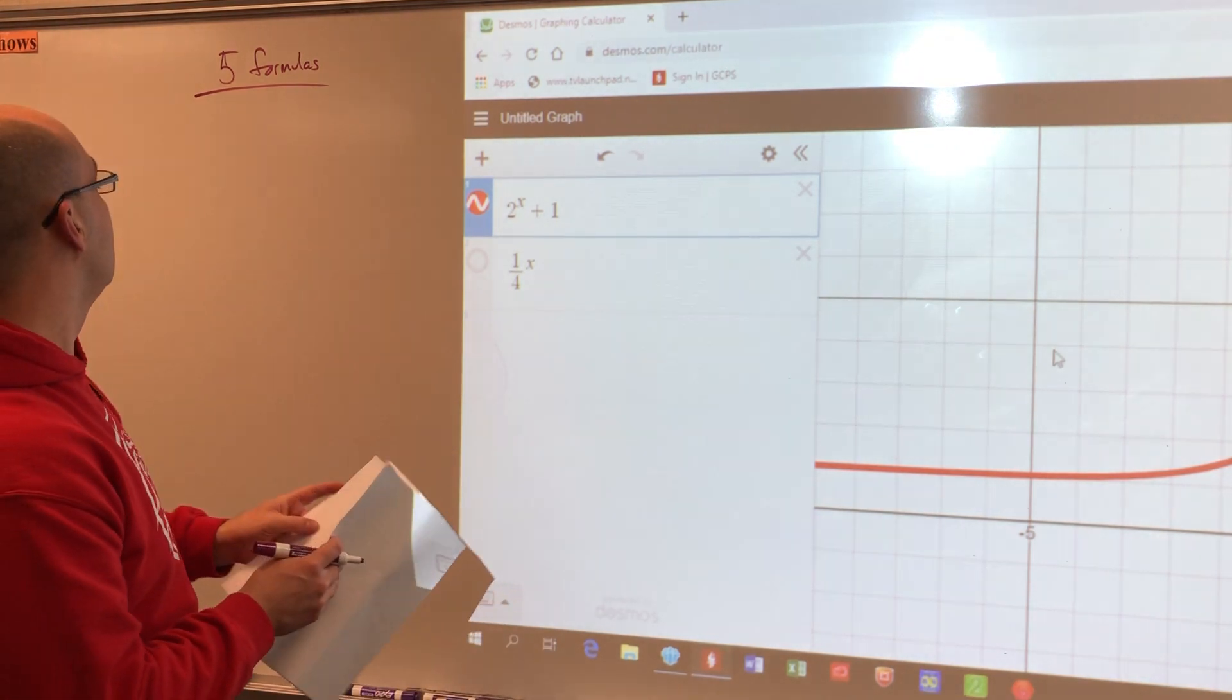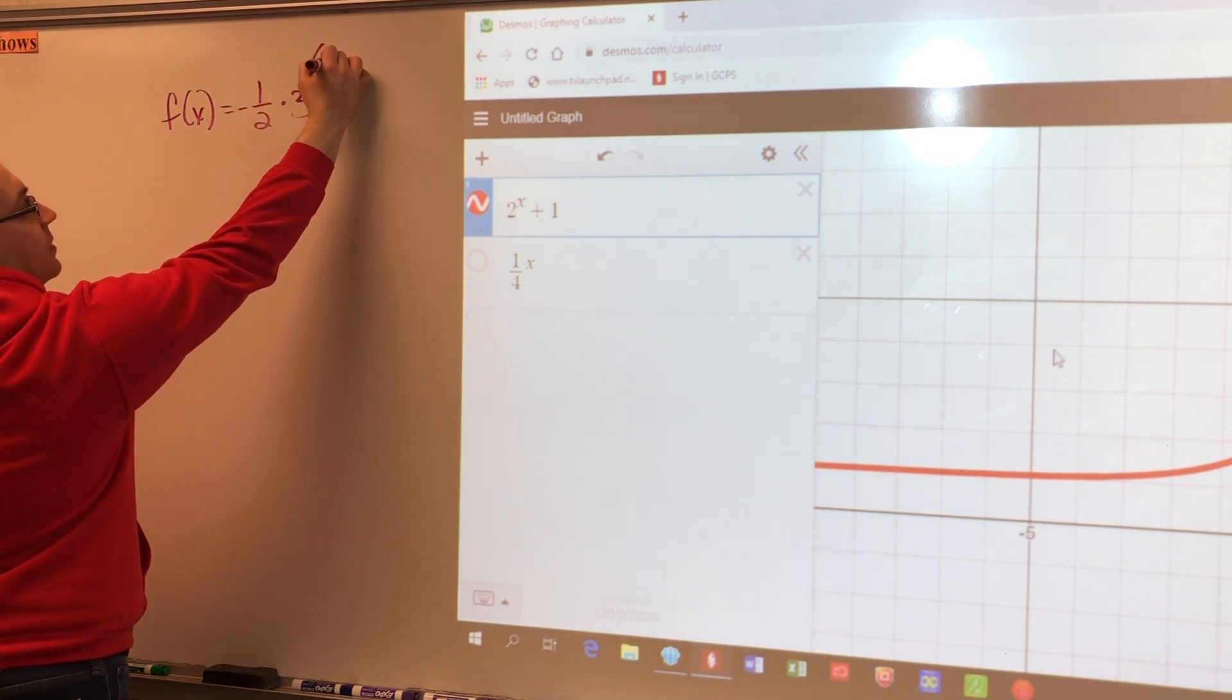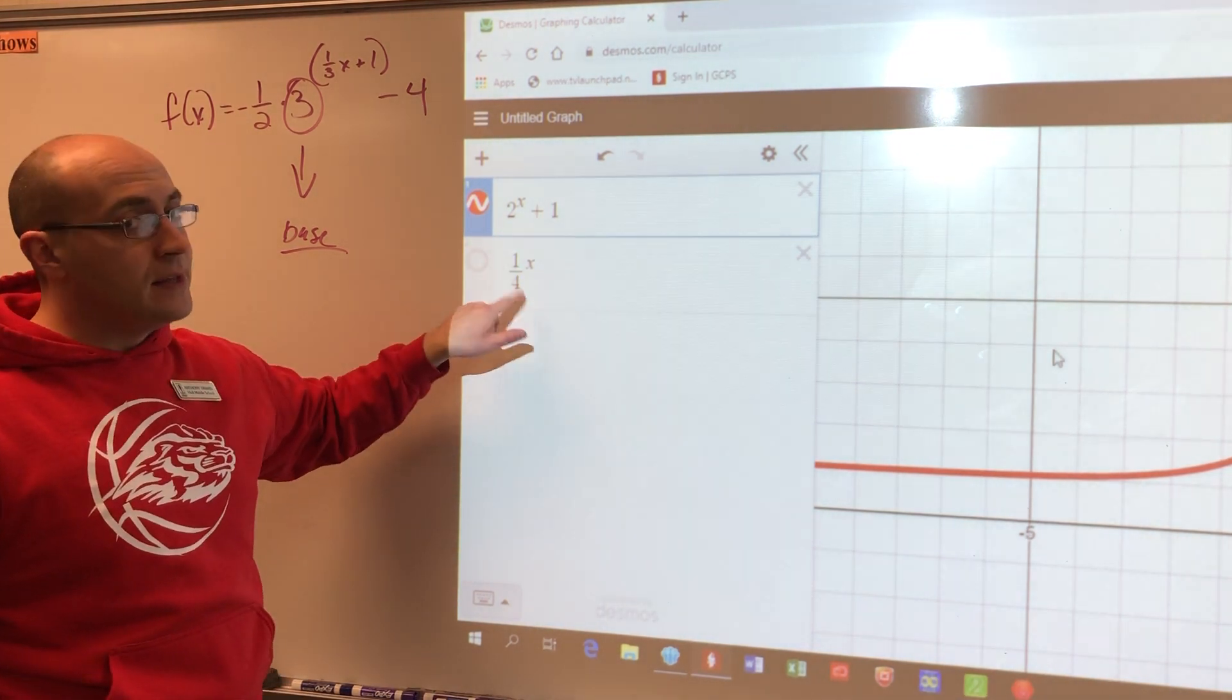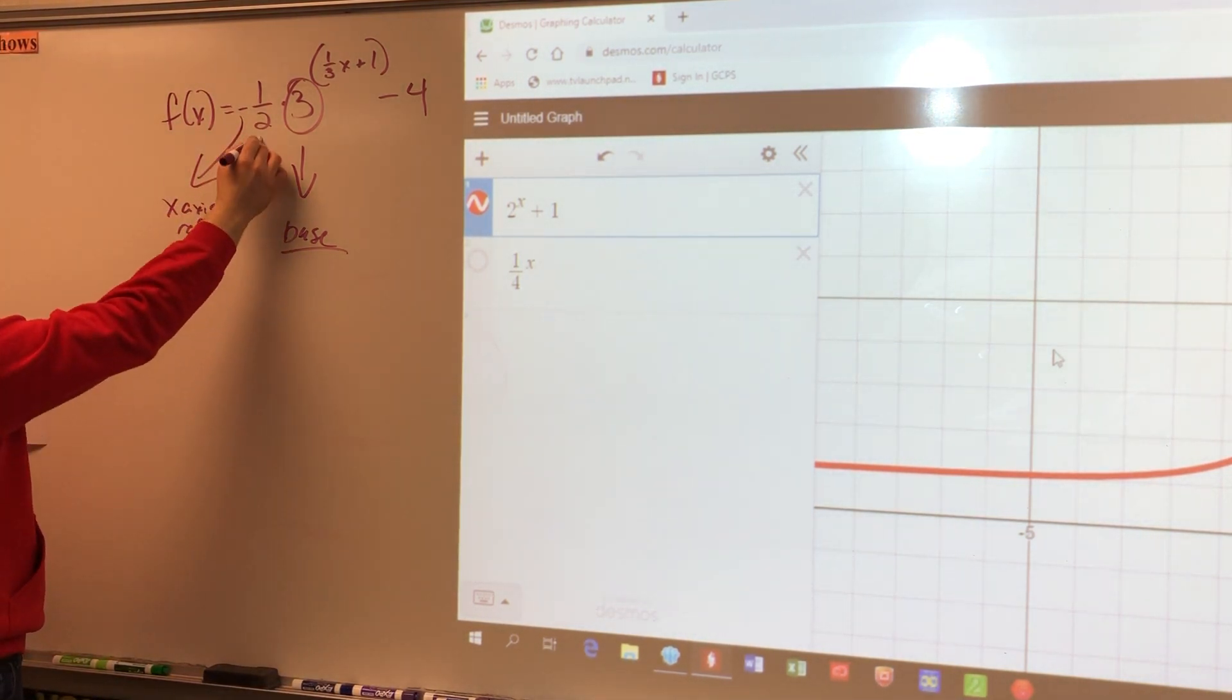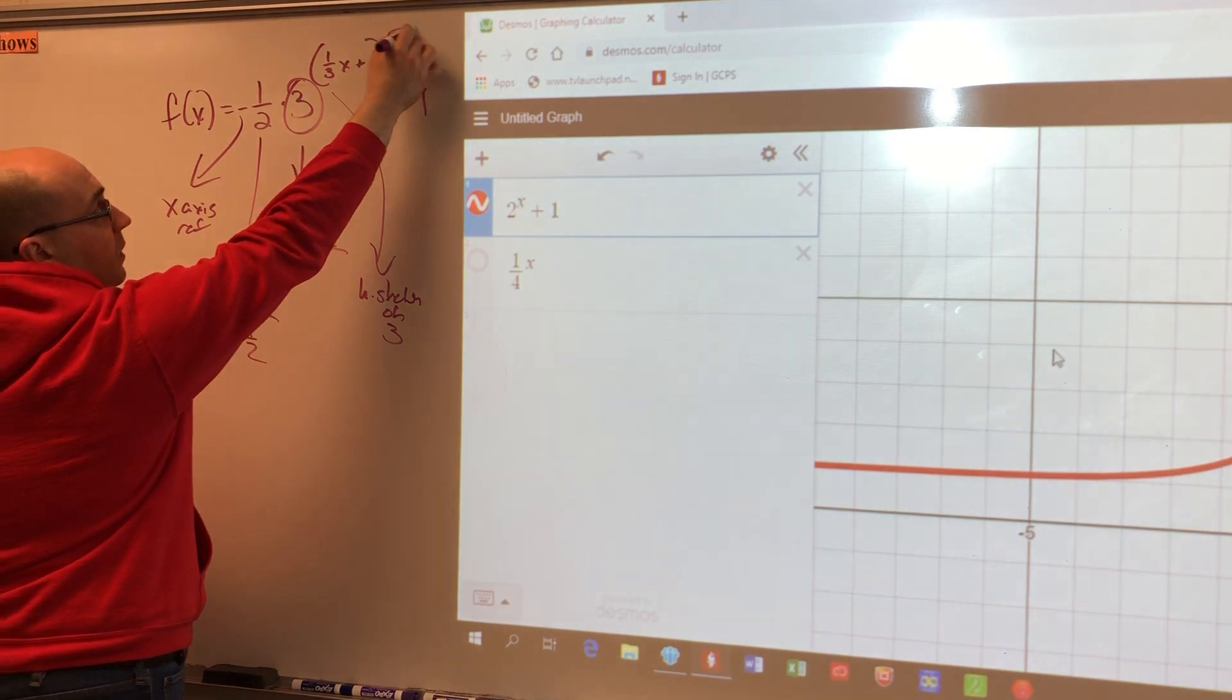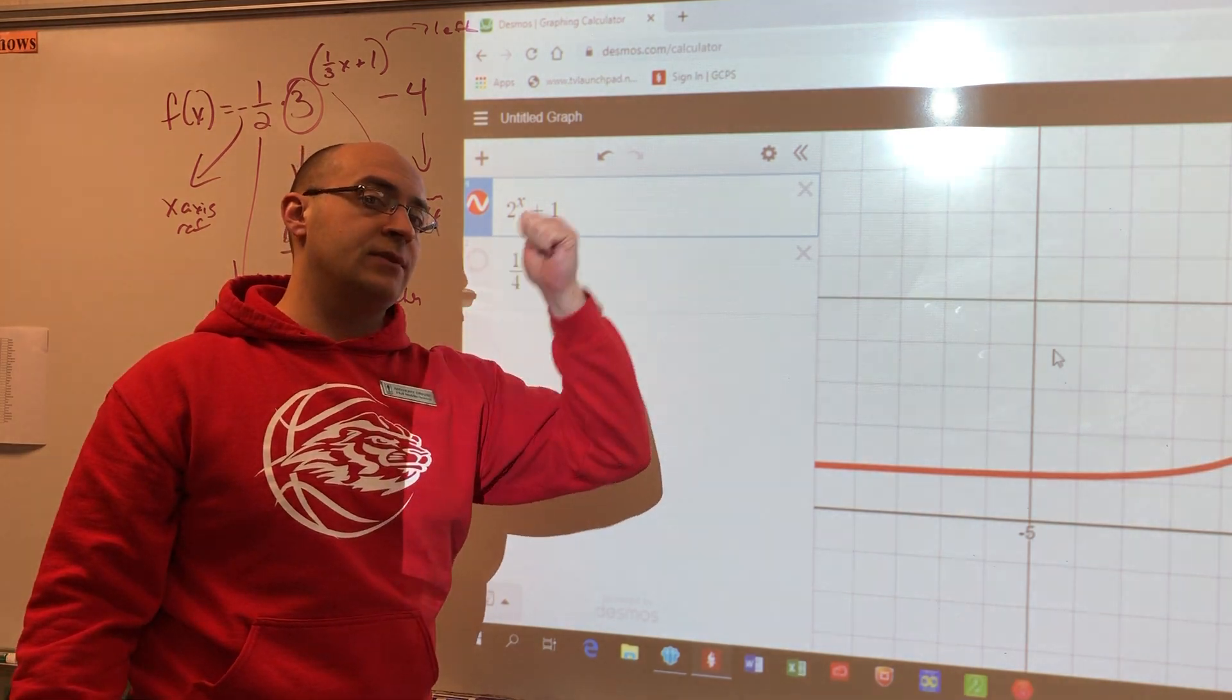Transformations. Again, transformations are pretty simple. So I'll do one and then we'll move on to characteristics and we'll call it. So let's say I had F of X equals negative one-half times three raised to the one-third X plus one power minus four. Three is the base. It's not a transformation. Like on here, if you can see it, two is the base. One-fourth is the base. It's the number right before the X-bar. The negative here indicates an X-axis reflection. The one-half is a vertical shrink of one-half. The one-third is a horizontal stretch of three. The plus one is a left one. And the negative four is a down four. You need to know those. So I might ask you to identify them from here or I might give you the words and you have to write an equation.